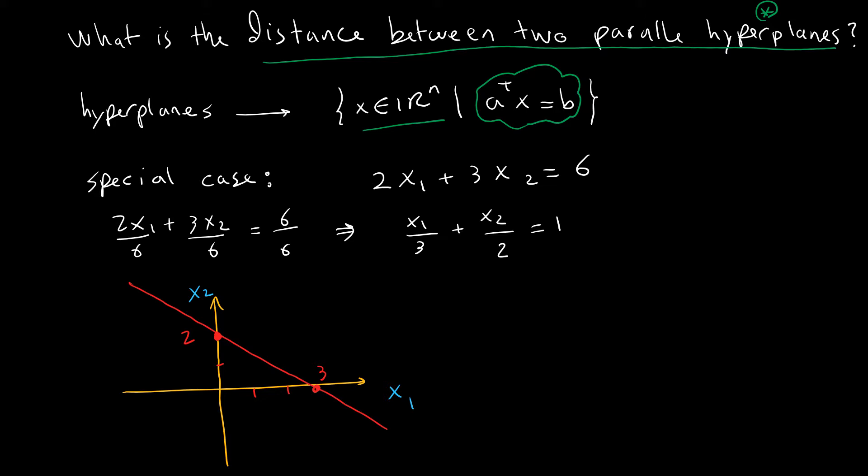This equation doesn't make sense at first, but if we look at a special case it will make much more sense. Suppose we have a hyperplane with x1 and x2. This is saying a equals [2, 3].